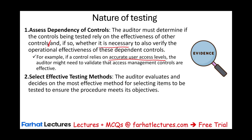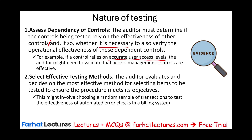The auditor also needs to choose an effective testing method — evaluating and deciding on the most effective method for selecting items to be tested to ensure the procedure meets its objective. This might involve, for example, choosing a random sample of transactions to test the effectiveness of automated error checks in a billing system.